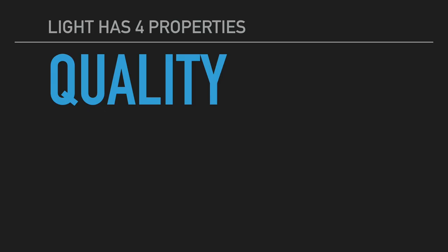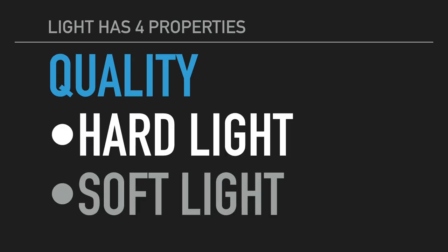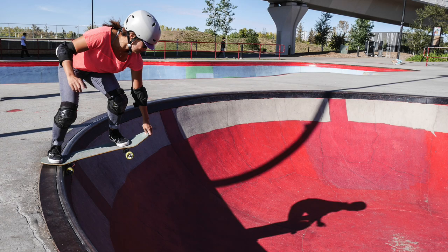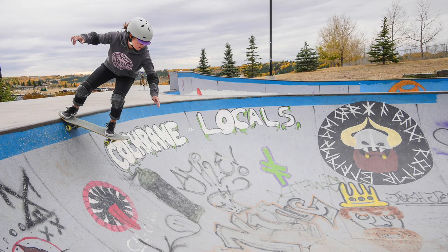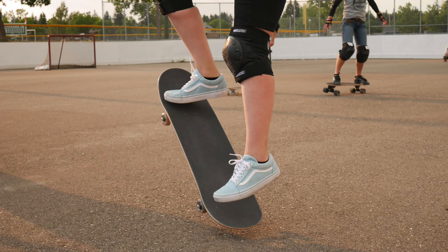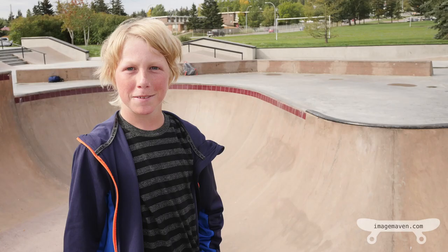Quality — light can be hard or soft, sometimes known as high contrast and low contrast. Bright sun produces hard, contrasty light, and shadows are deep and dark. On an overcast day you'll get soft light, and detail in the shadows will be visible. If the air is polluted or smoky, you'll also get soft, low-contrast light.